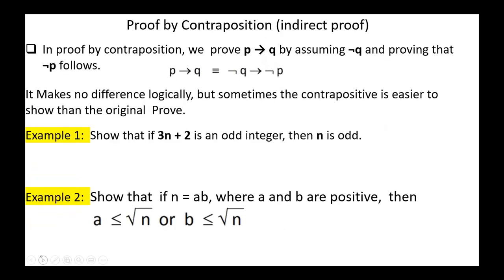Next, proof by contraposition. This method is an example of indirect proof. In proof by contraposition, we prove P implies Q by assuming not Q and proving that not P follows. P implies Q is equivalent to not Q implies not P. It makes no difference logically, but sometimes the contrapositive is easier to show than the original proof.